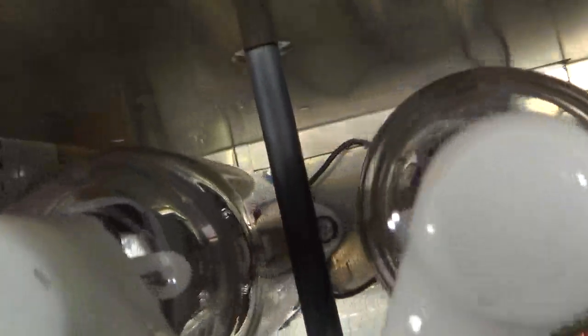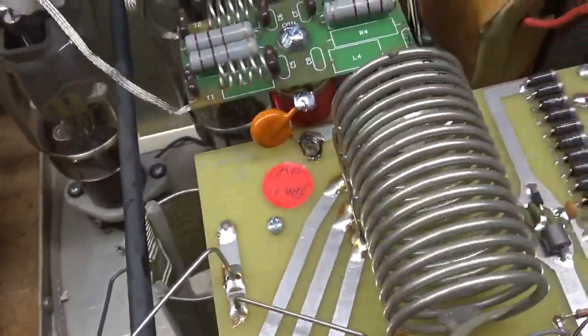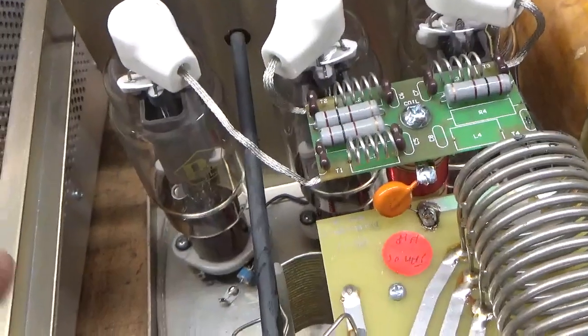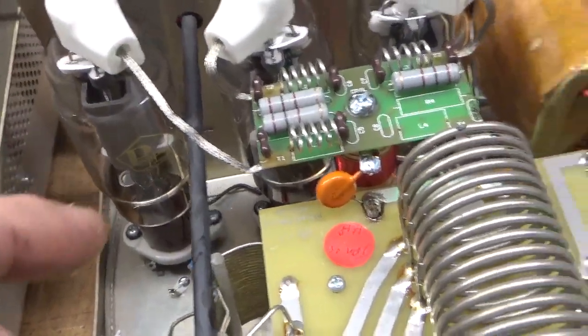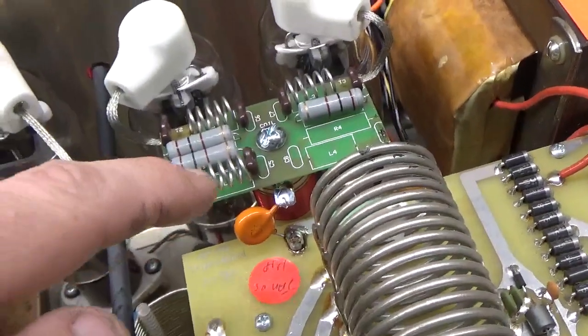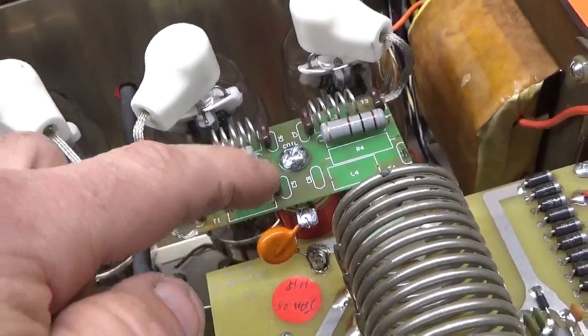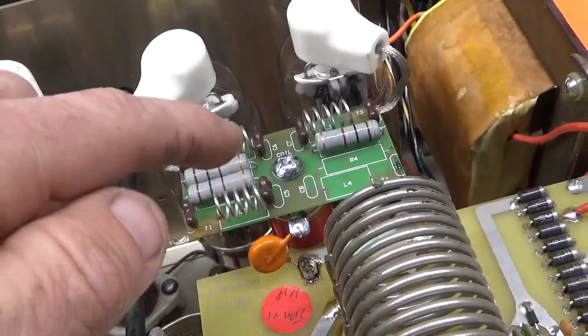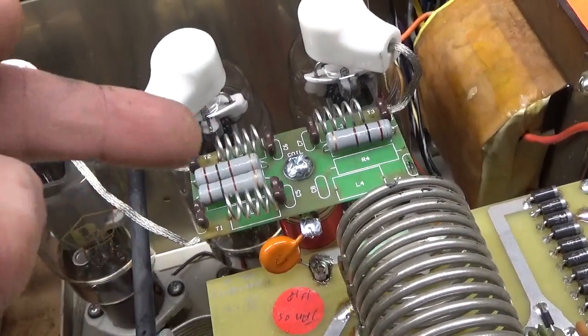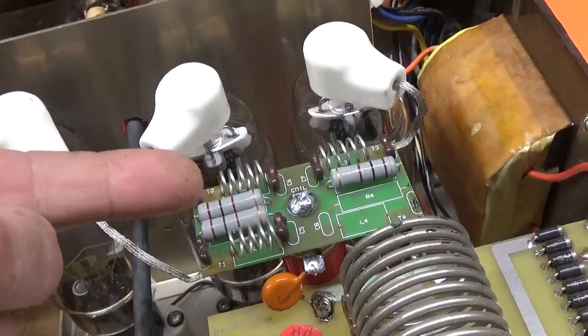One per side of the filament. All filaments are in parallel, so just need one per side. I made a copper strip piece for the connection between the plate blocking cap and the plate choke, which goes up underneath the parasitic suppressor board.